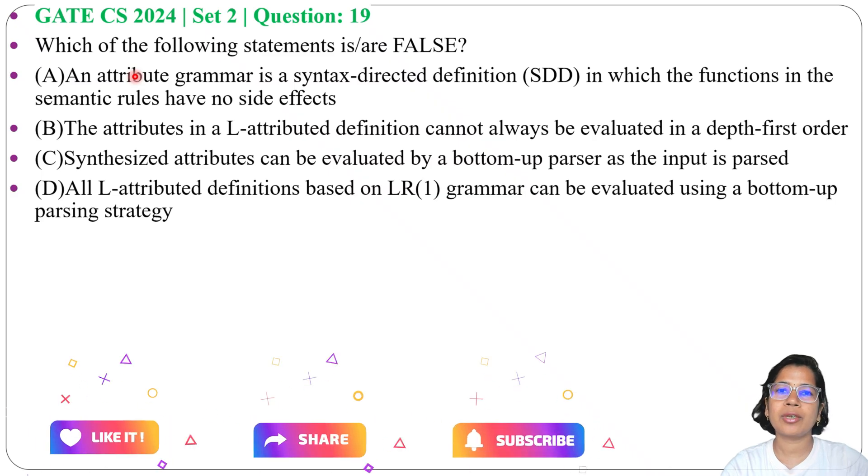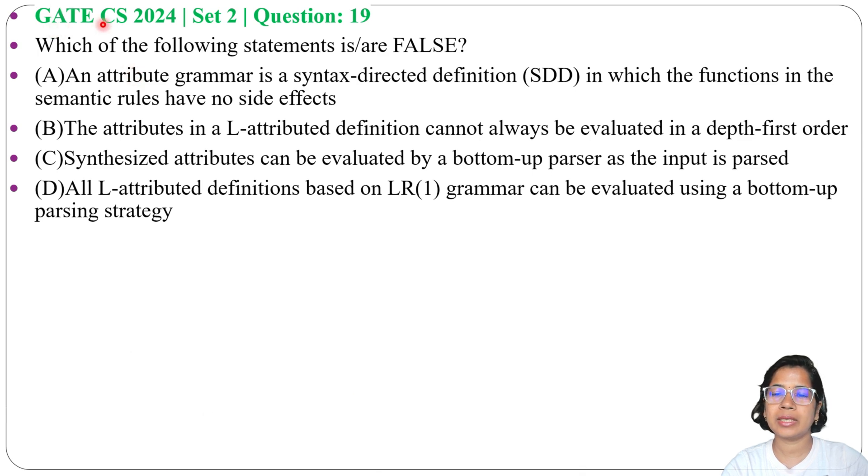Let's have one previous question on SDD. This question was asked in GATE CS 2024 Set 2, Question Number 19. Which of the following statements is or are false? Four options with four statements are given. All statements are direct from the book. I already discussed all these statements during the third chapter of Compiler Design lecture. Just go through the lecture and come to this question so you can understand.